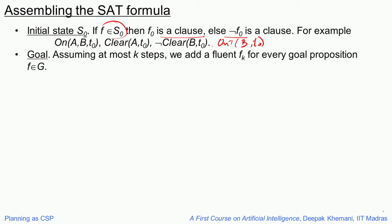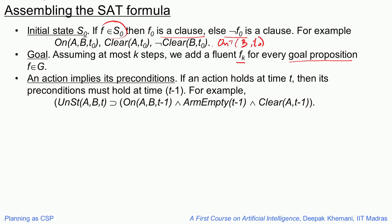For the goal clause, assuming at most k steps — and this is the same theme that happens in GraphPlan, in CSP, and in planning as satisfiability — you pose it as a problem of a given length, that the plan is of a given length, and then try to solve it. We can iteratively increase the length, so some kind of iterative deepening algorithm can work here. If you assume the plan is of at most k steps, then we add a fluent fk for every goal proposition specified in the problem.